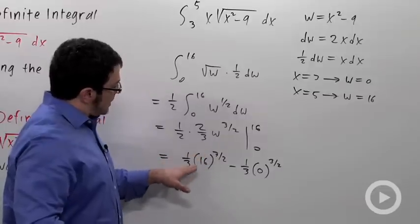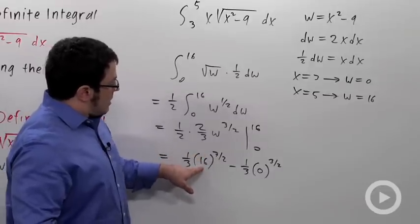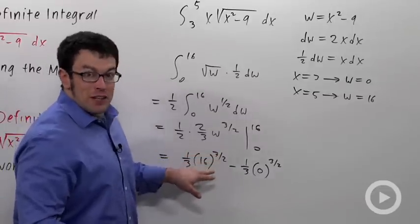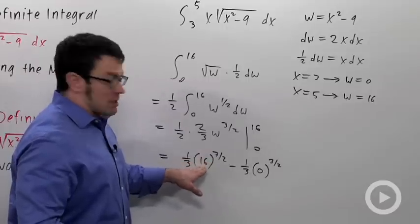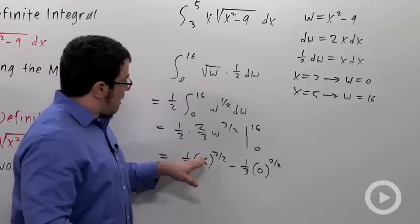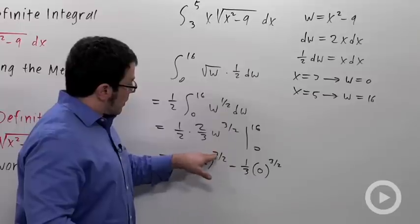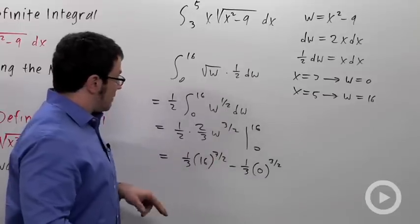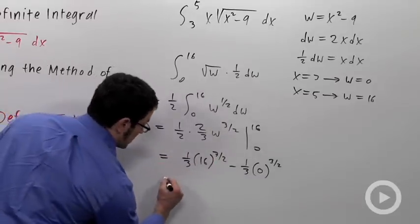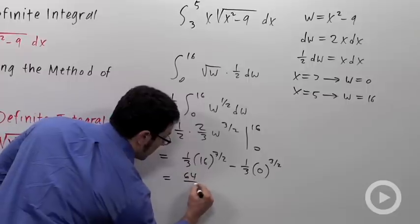But what's 16 to the 3 halves? Whenever I have a fractional exponent, it depends on what the input is as to whether I want to cube first or take the square root first. But this number is a perfect square. So I'm going to take the square root first. The square root is 4. Then raised to the 3rd power is 64. So this is 64 thirds. And that's my answer.